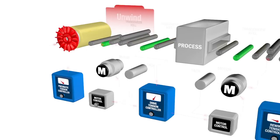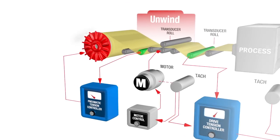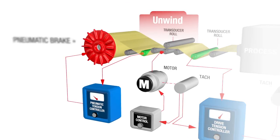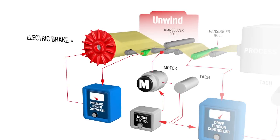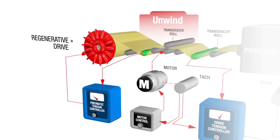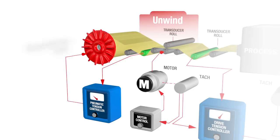Tension in the unwind zone can be controlled by a pneumatic brake, an electric brake, or a regenerative drive.